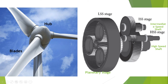Now let us discuss the intermediate shaft. The intermediate shaft is located between the high and low speed shafts, and it is supported by the intermediate speed stage bearings, which are located on the front and rear sides of the shaft — approximately here and here. These bearings may be damaged similarly to those of the high speed stage bearings as mentioned previously.